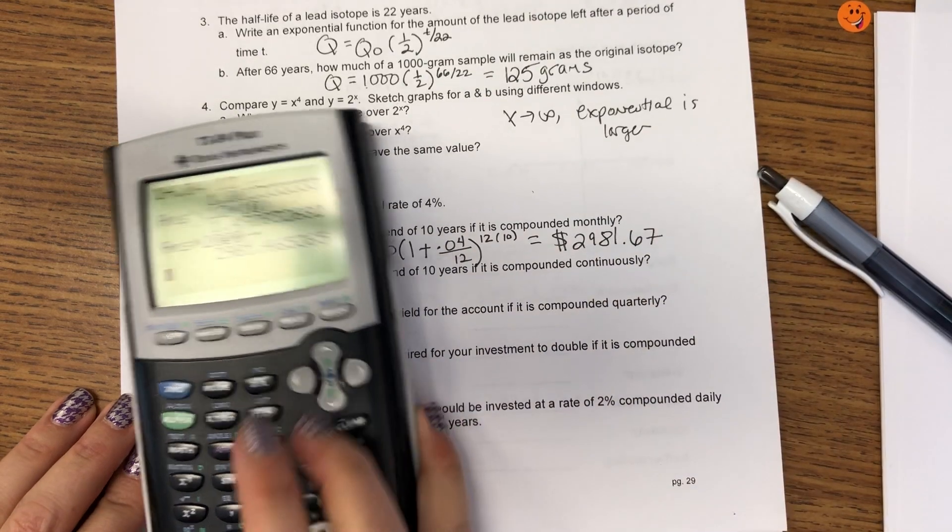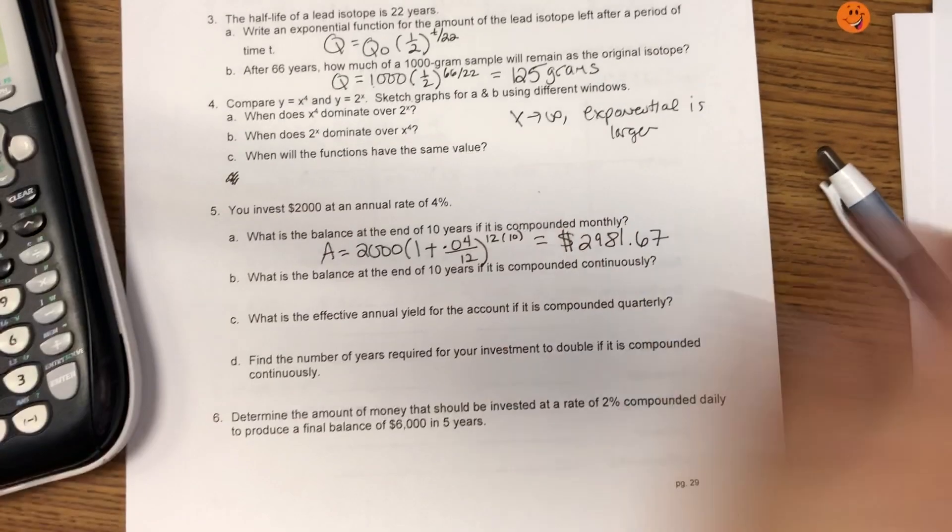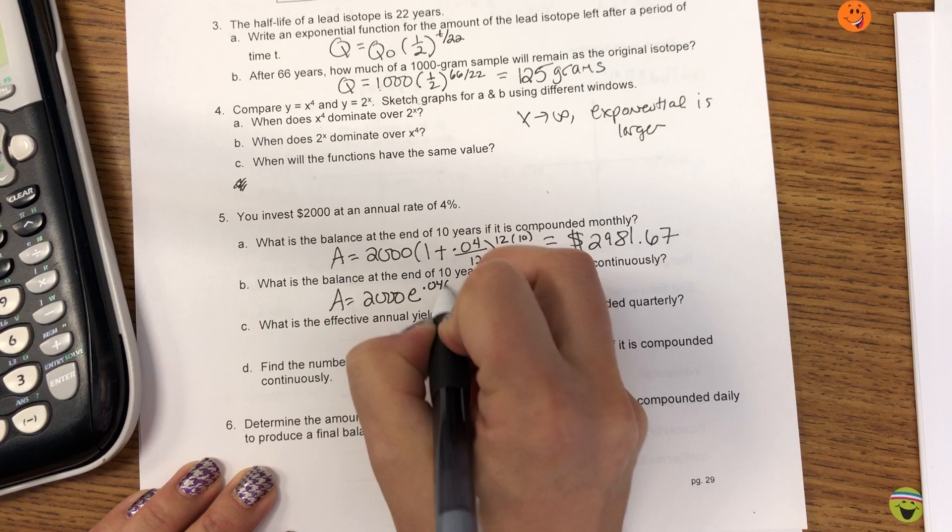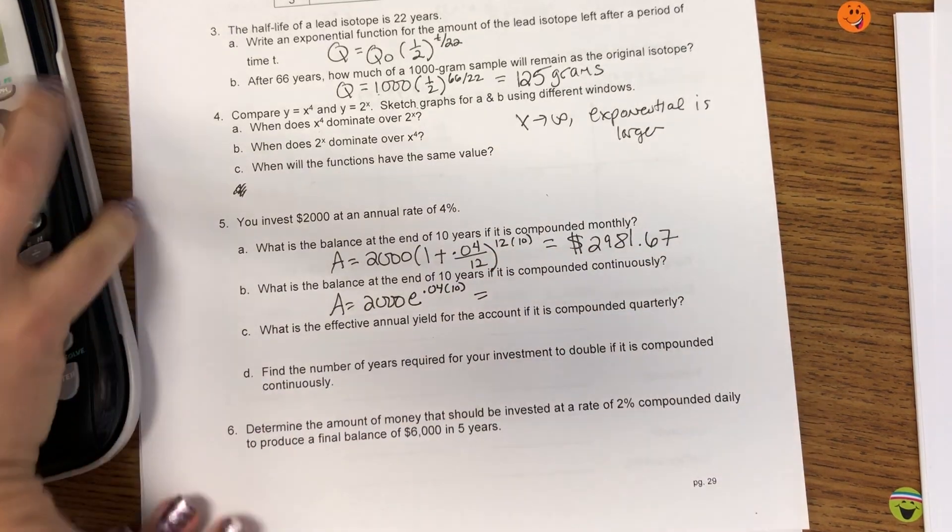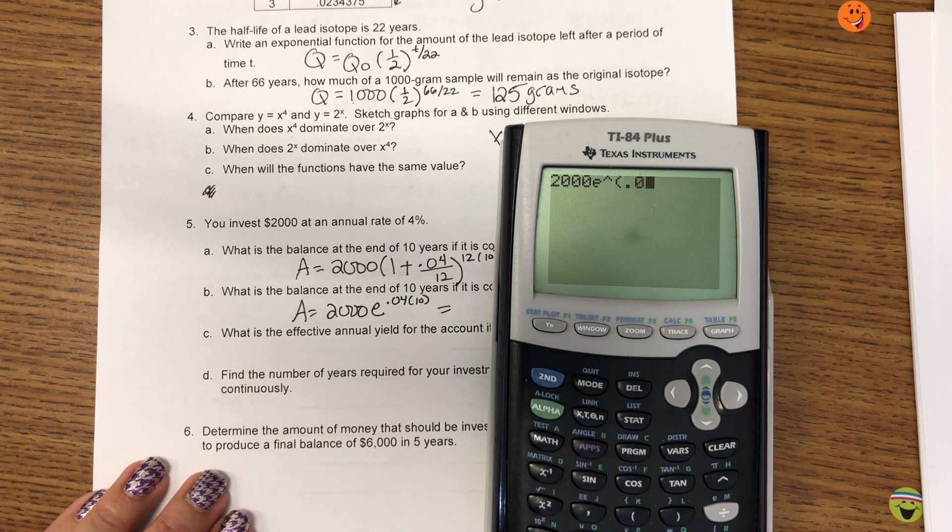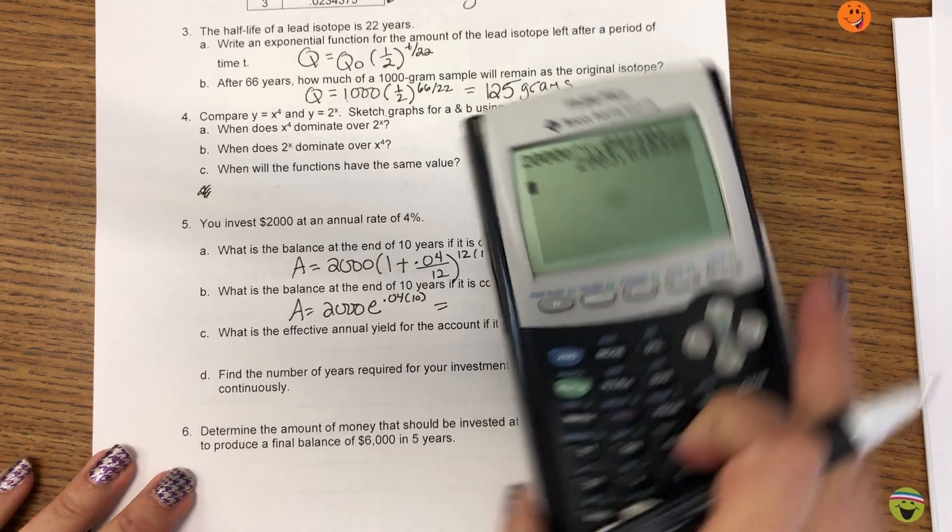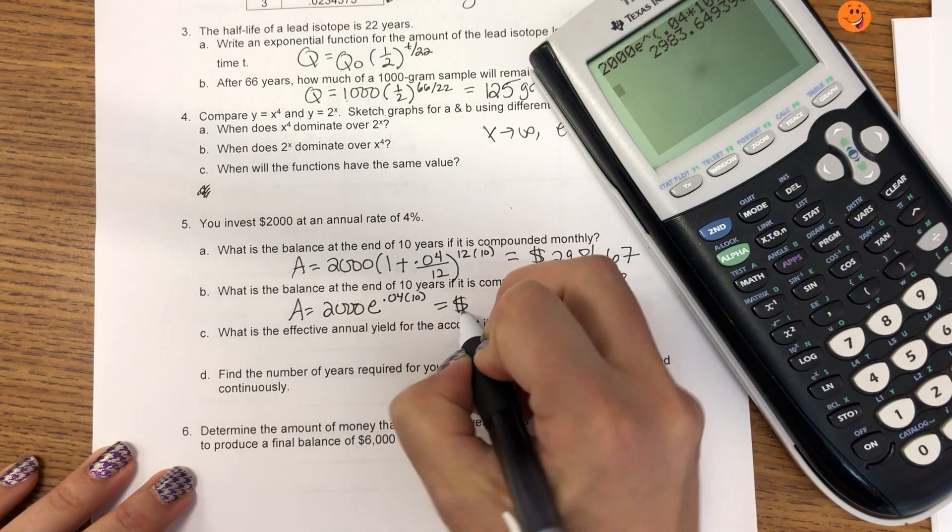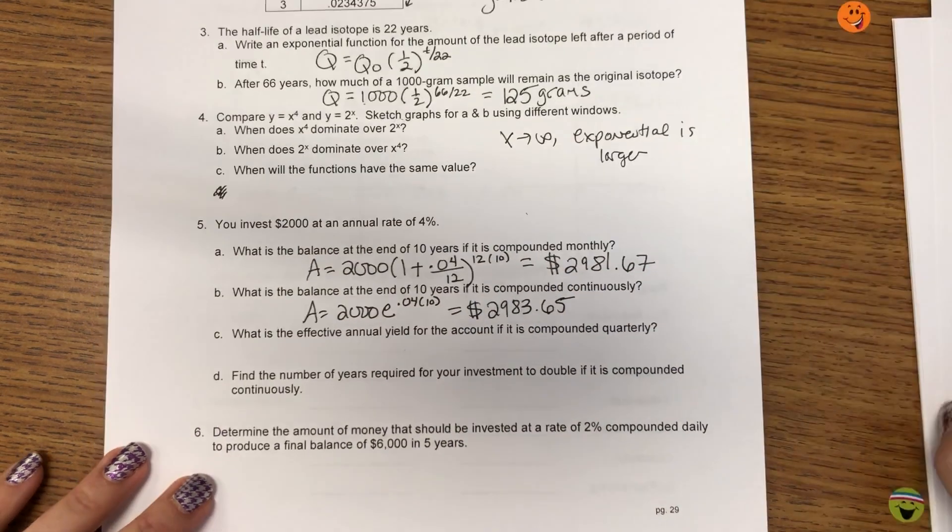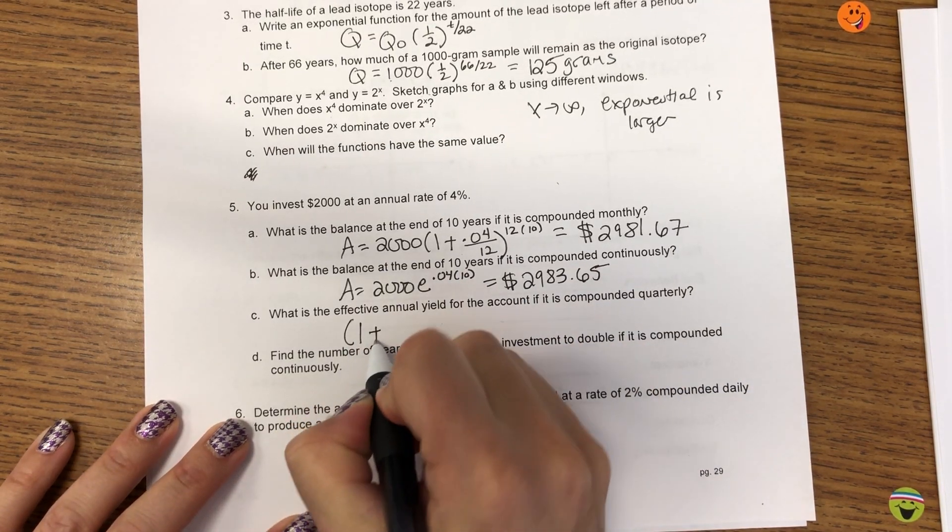Round that appropriately on your test. Alright, continuously is the initial deposit E to the RT. So, that's $2,986.65.